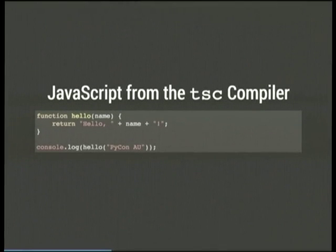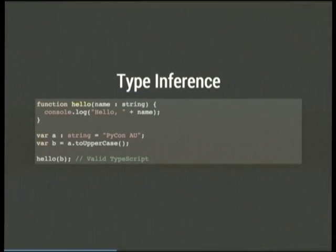TypeScript runs through a compiler which does a type erasure pass on your code and emits something that looks remarkably similar to the JavaScript you probably would have written anyway. Under the hood it's exactly the same — the compiler just verifies that your types are consistent and then gets rid of all the type annotations. It runs exactly the same way as your JavaScript would have. Because a variable is a string and `toUpperCase` returns a string, you can make another variable without declaring its type and the type checker will know it is a string, allowing you to validly pass it into that hello function.